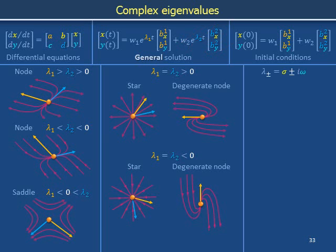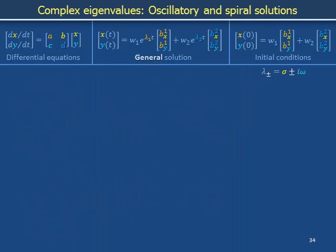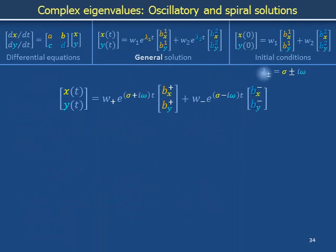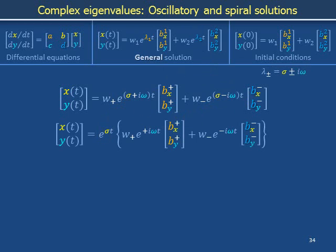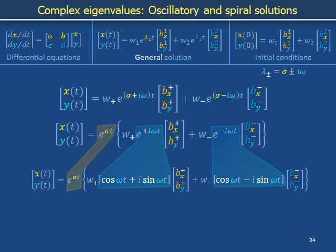Sometimes when you solve the quadratic equation that defines the eigenvalues of the matrix describing the dynamics of the system, you get pairs of solutions with imaginary parts. Here, sigma and omega are both real numbers. Sigma is called the real part of lambda, and omega is the imaginary part. In the chapter on linear algebra, we said that complex eigenvalues were hints of circular or spiral motion. Substitute the lambdas into the general solution. One eigenvector corresponds to the plus sign and the other to the minus sign. Factor out the common e to the sigma t.